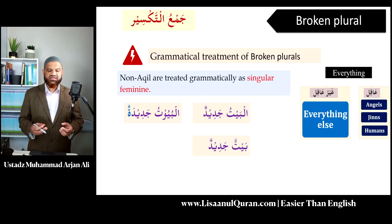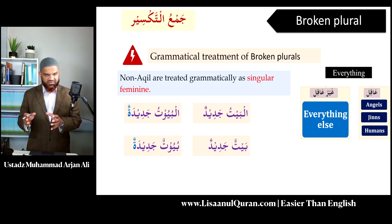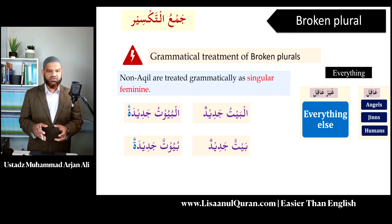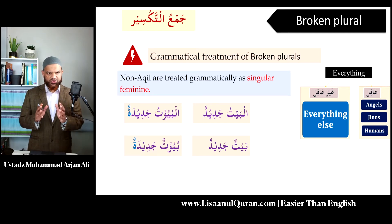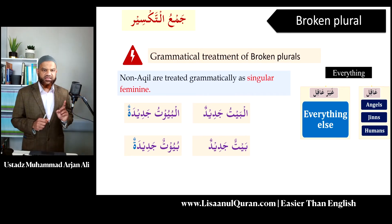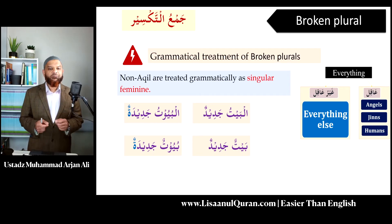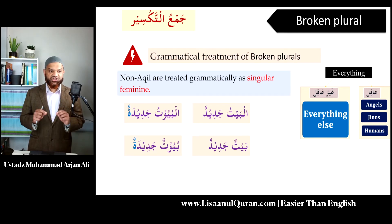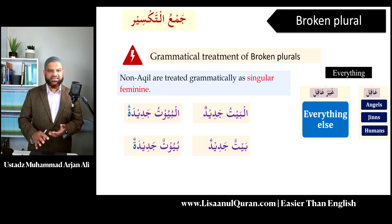Another example: 'baytun jadeedun' means 'a new house'. For new houses, we say 'buyutun jadeedatun'. Remember the word 'bayt' is masculine, but 'buyutun' — houses — takes 'jadeedatun', which is singular feminine. So in Arabic, if I want to say 'they are houses', I am essentially saying 'she are houses' — something strange for us to get used to, but through practice you'll get there. Normally, non-aqil broken plurals are treated as singular feminine.